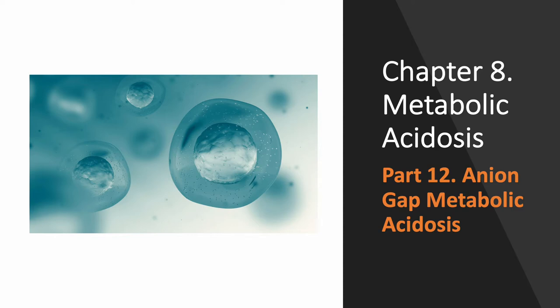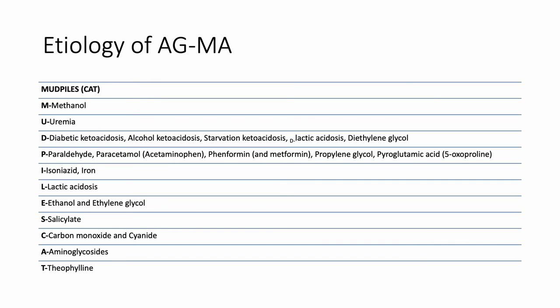Today we'll discuss high anion gap metabolic acidosis. Let's start with the etiology. Many students and residents use the mnemonic MUDPILES CAT to remember the etiology of anion gap metabolic acidosis.